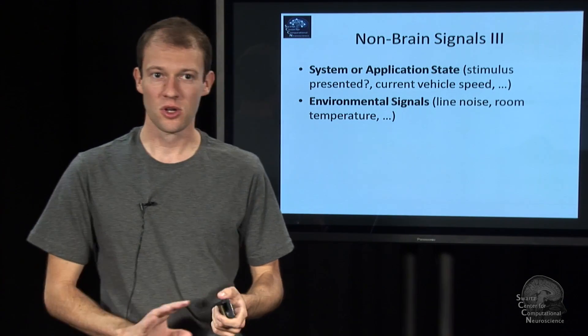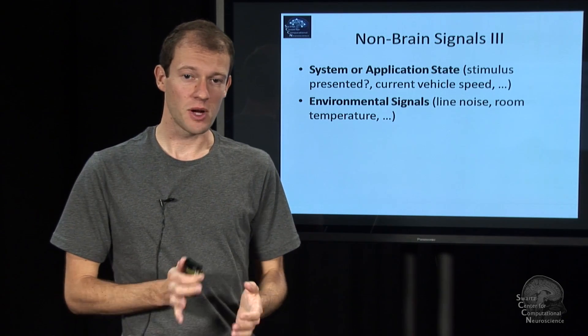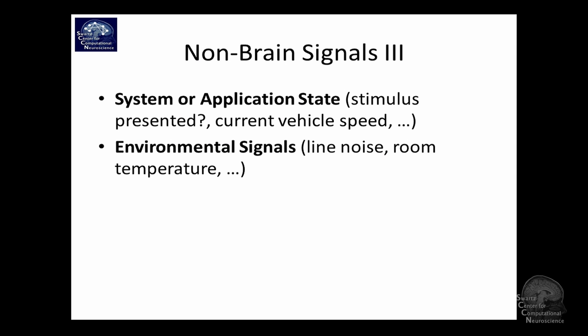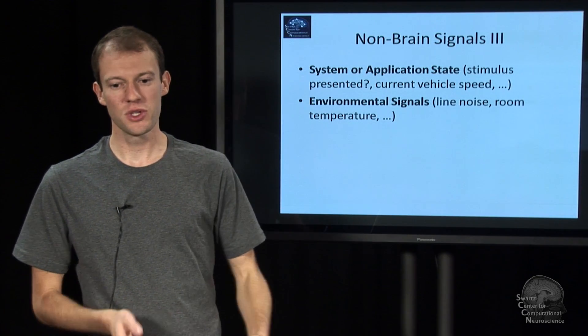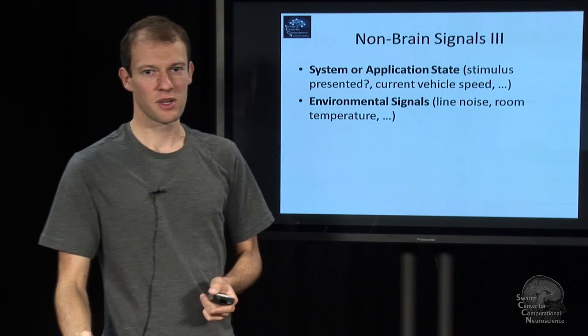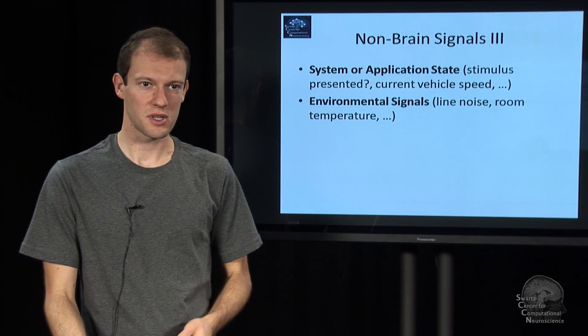And then there is also so-called system state or application state that the person is interacting with. So this is just variables in your program, basically. Did we just show a stimulus or what's the angle of the vehicle that you simulate and things like that, or of your actual vehicle. And these are important extra context bits of information that you should use if you have them, because otherwise you're going to do a worse job. And that also includes environmental signals like the power line noise that you pick up, that you can use to get rid of some artifacts and things like that.